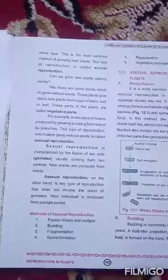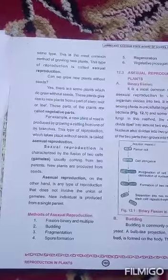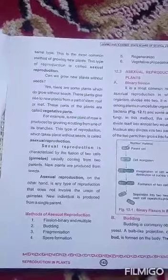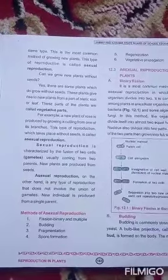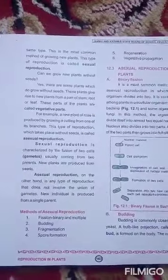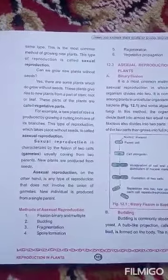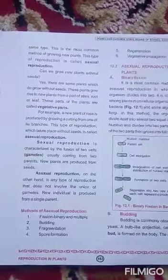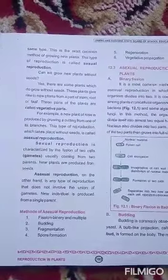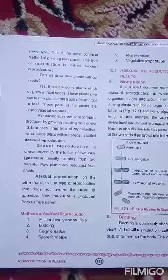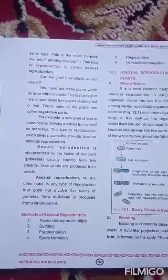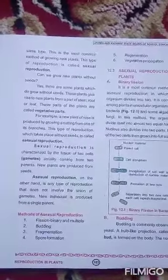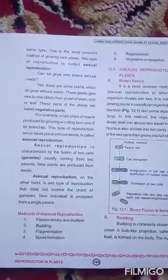To repeat: asexual reproduction does not involve the union of gametes. New individuals are produced from a single parent — there is no need for fusion of gametes, and no need for both male and female parents.